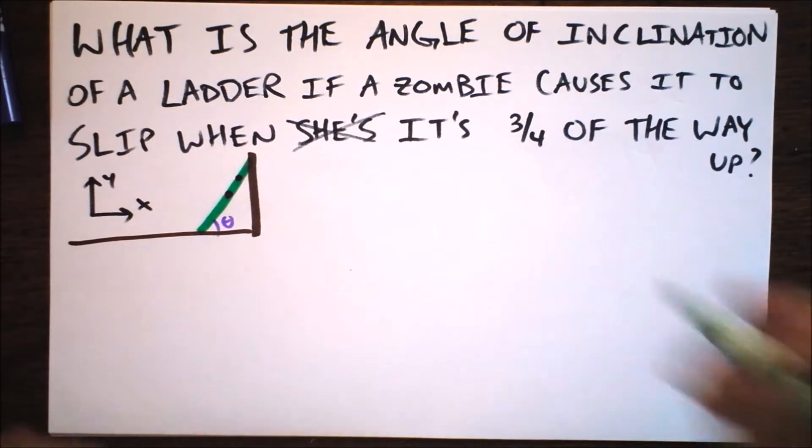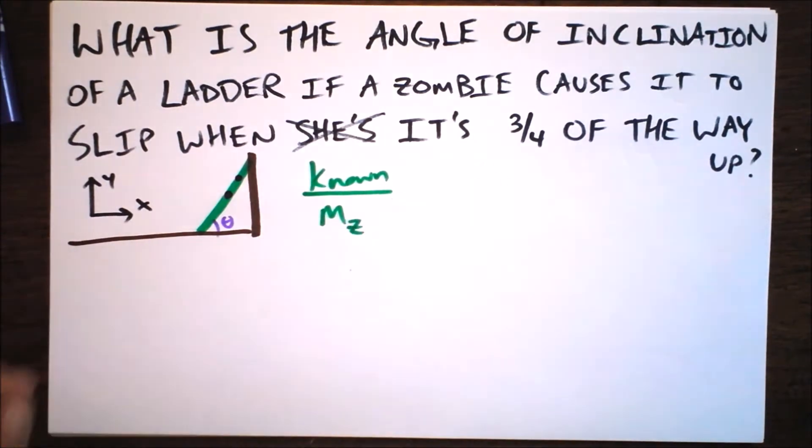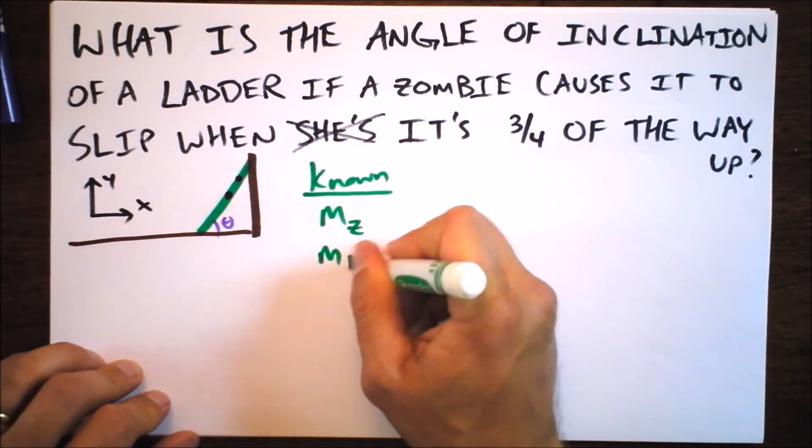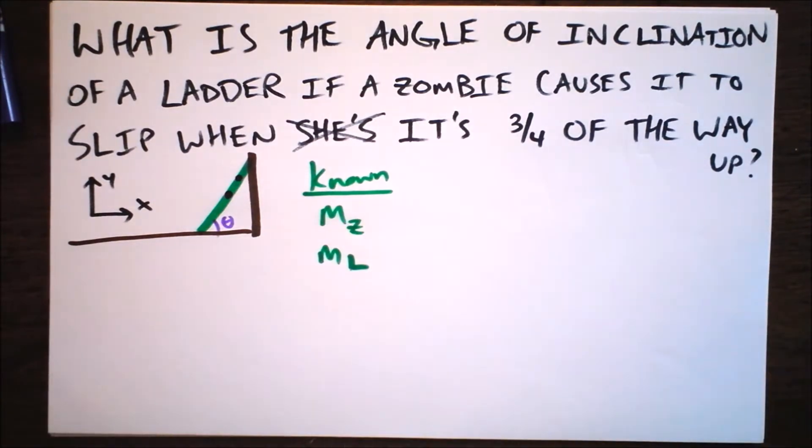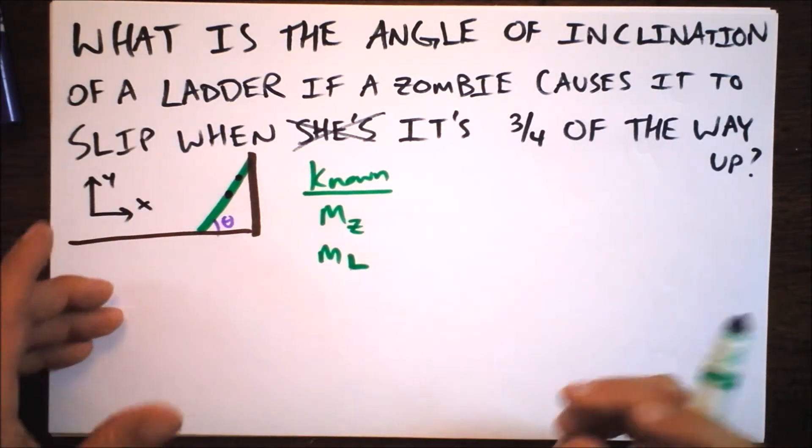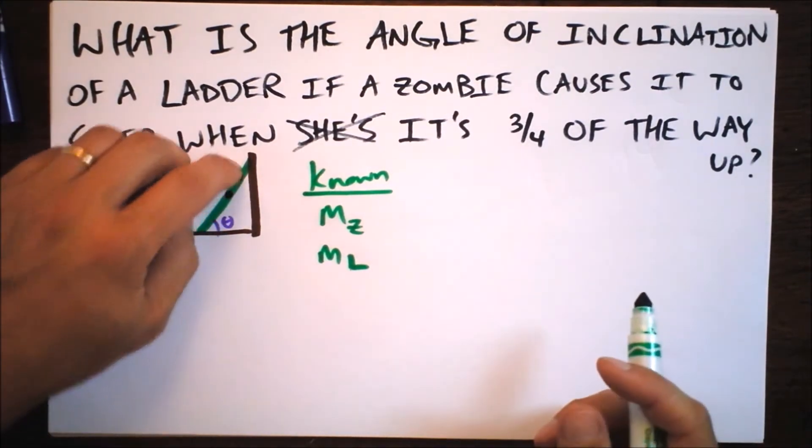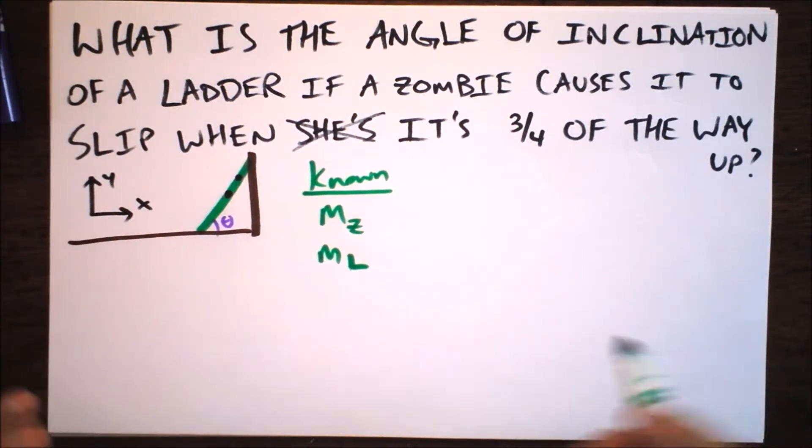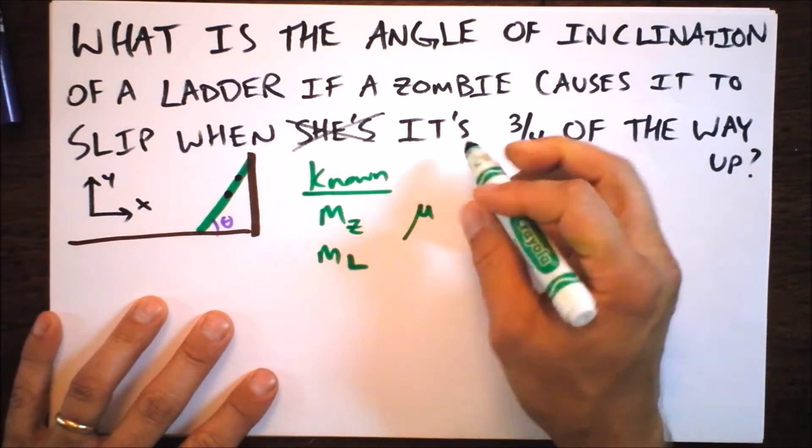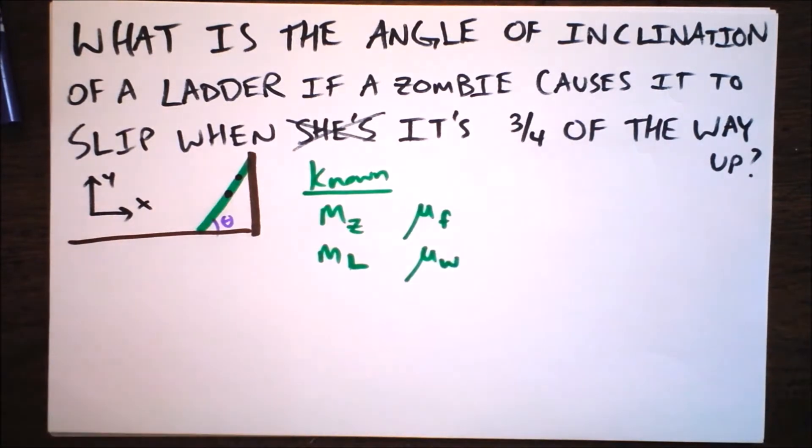The things that we're being given are going to be listed over here. Let's say that we know the mass of the zombie (mz) and we know the mass of the ladder (ml). We know the center of mass of the ladder is half of the length of the ladder. And we know where the zombie is also. But we also know mu of the floor (μf) and we know mu of the wall (μw).